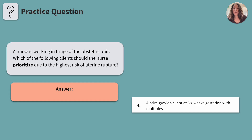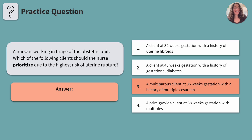Number four: a primigravida client at 38 weeks gestation with multiples. A client labeled primigravida is in their first pregnancy. Although being pregnant with multiples will cause the uterus to grow more than it might with a singleton, neither multiples nor a first-time pregnancy increases the risk of uterine rupture. That means the correct answer is number three — a multi-parous client at 36 weeks gestation with a history of multiple cesareans.